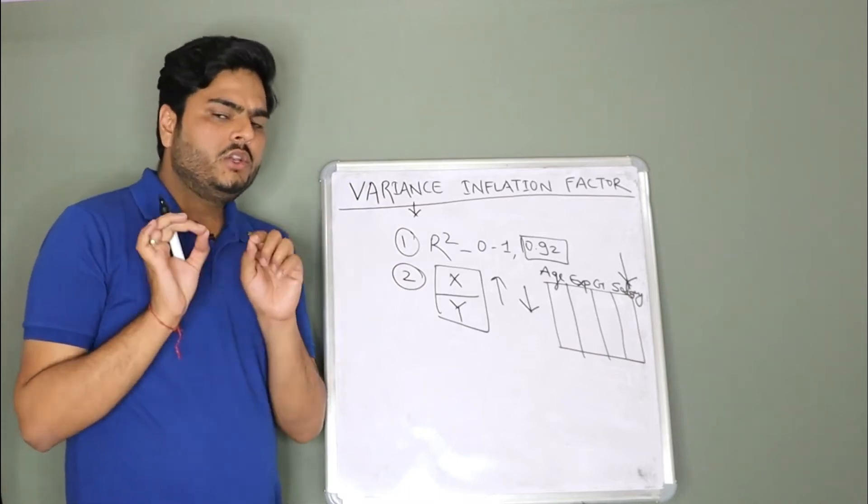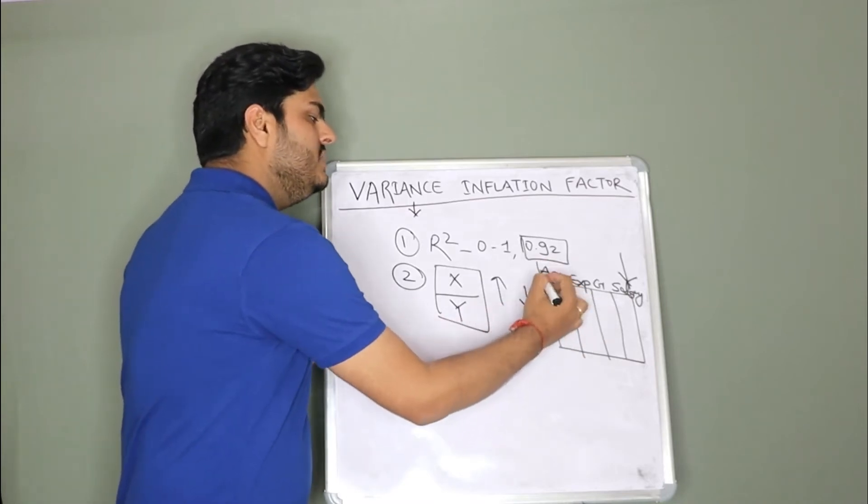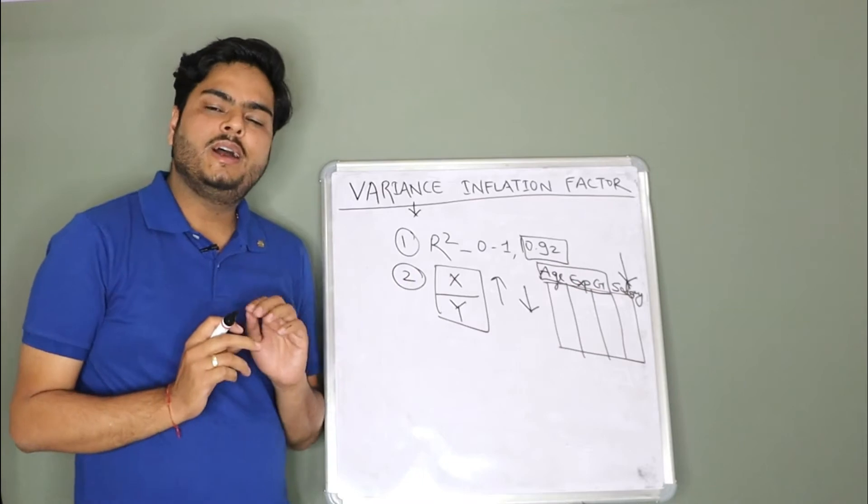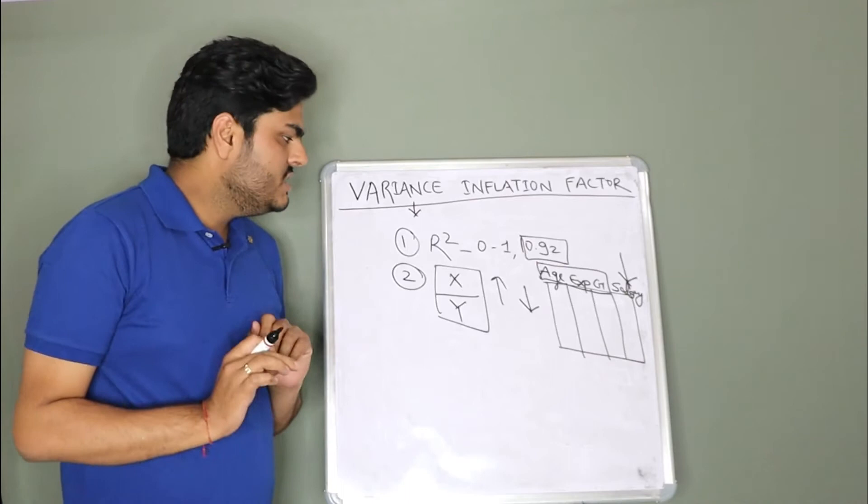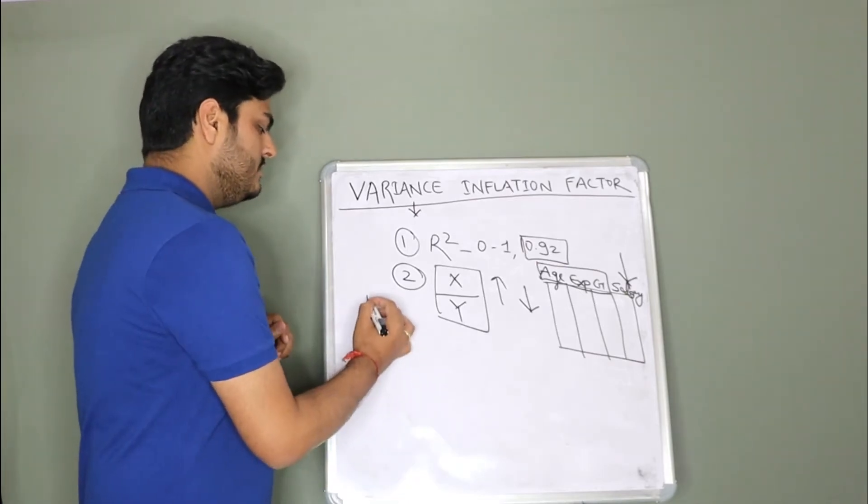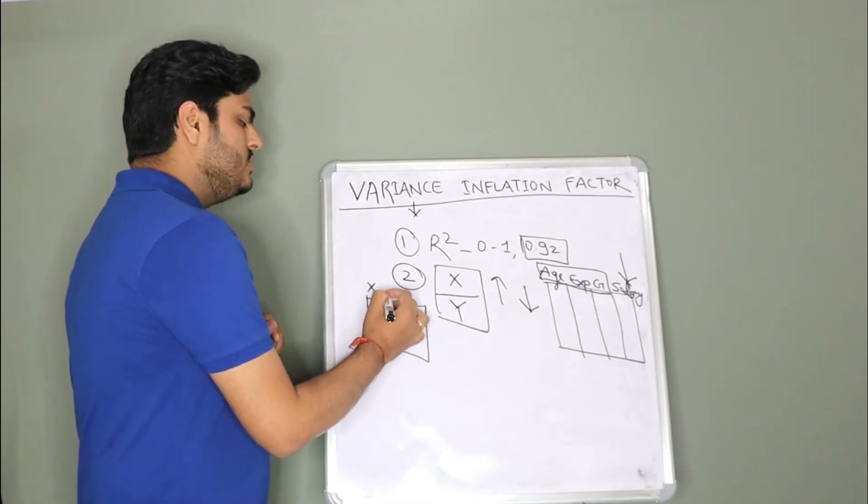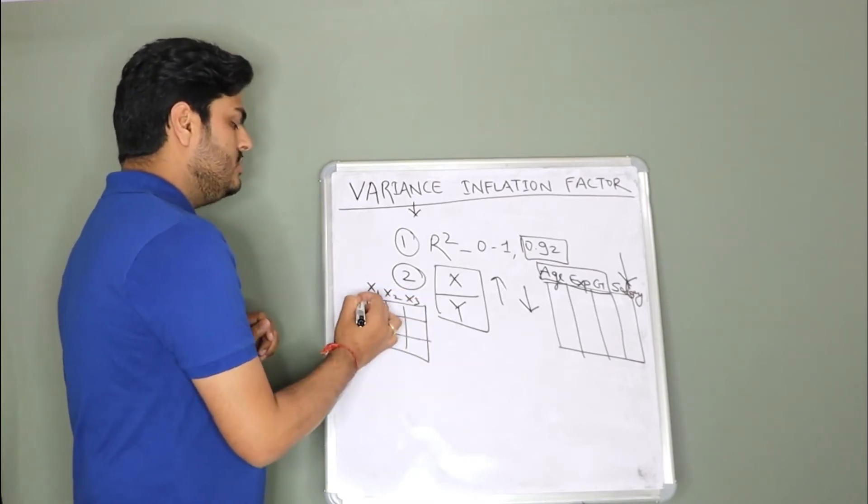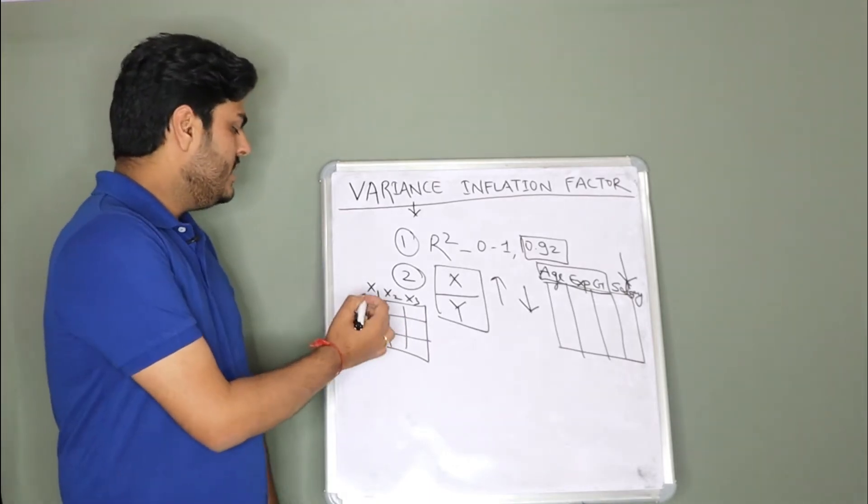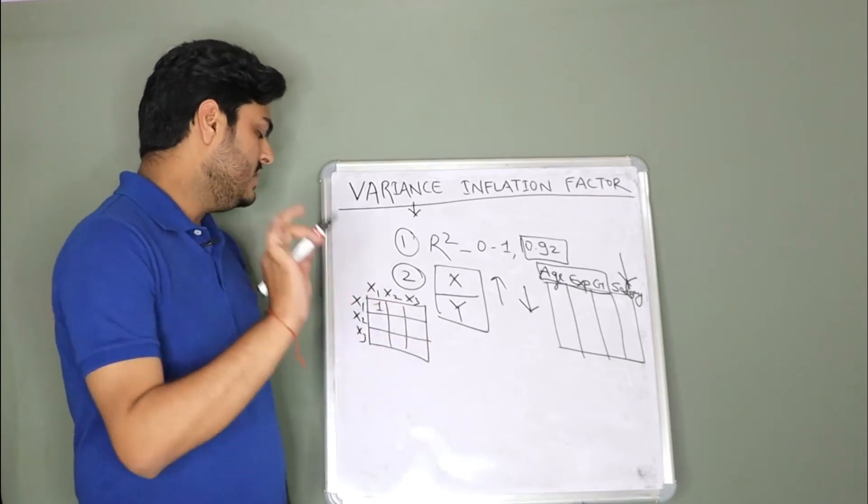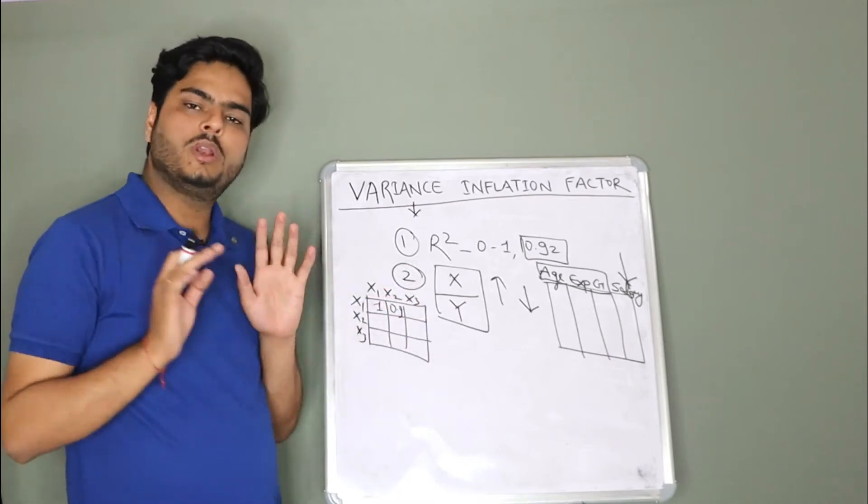Now I told you in multicollinearity video that you can see the correlation between independent features and remove the features which are highly correlated with other features. So when you see correlation, what you will see is a correlation matrix like this, a correlation matrix. In this matrix, on one side will be x1, x2, x3 and here also you will have x1, x2, x3. Here you will have x1 correlation with x1 always 1, x1 correlation with x2, some number let's say 0.9. This is how your correlation matrix will look like.